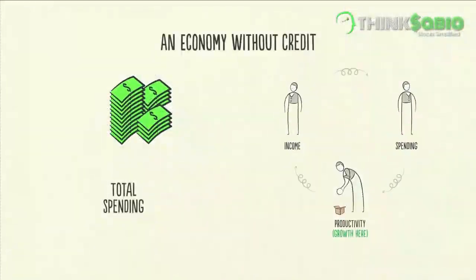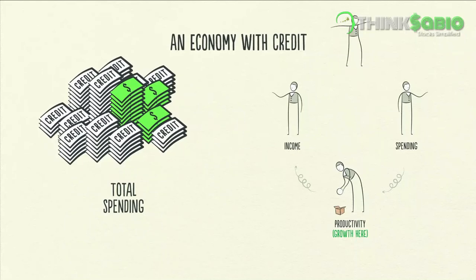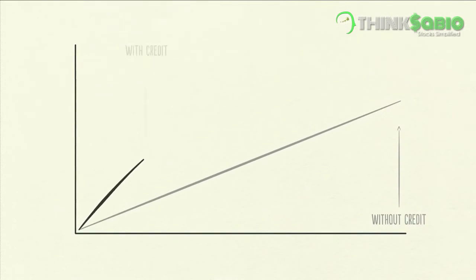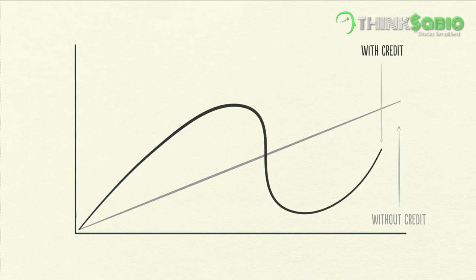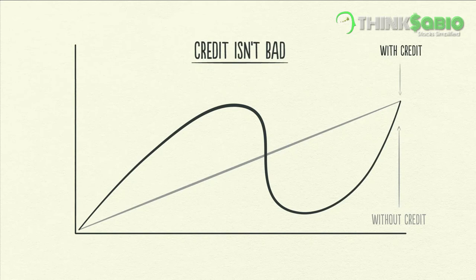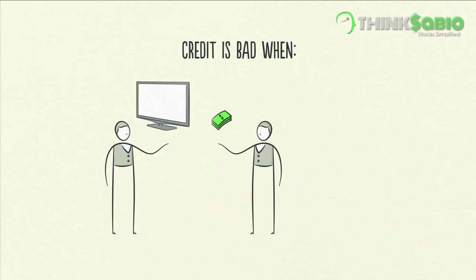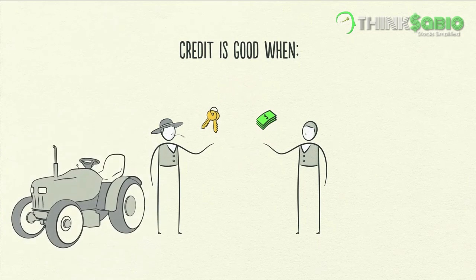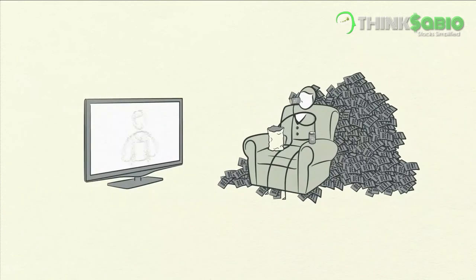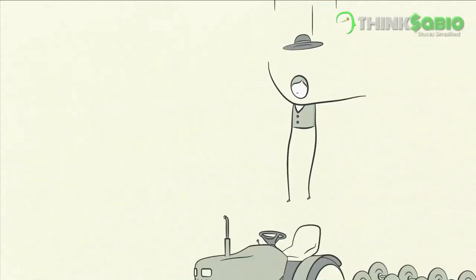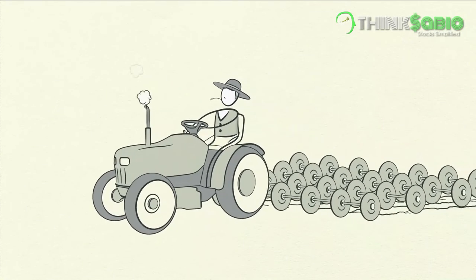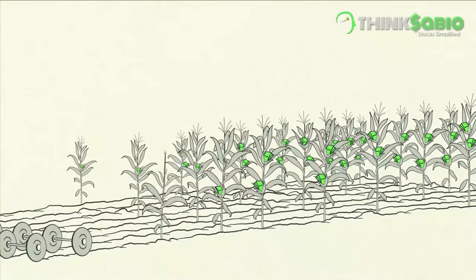In an economy without credit, the only way to increase your spending is to produce more. But in an economy with credit, you can also increase your spending by borrowing. As a result, an economy with credit has more spending and allows incomes to rise faster than productivity over the short run, but not over the long run. Credit isn't necessarily something bad — it's bad when it finances overconsumption that can't be paid back. However, it's good when it efficiently allocates resources and produces income so you can pay back the debt. For example, if you borrow money to buy a big TV, it doesn't generate income to pay back the debt. But if you borrow money to buy a tractor and that tractor lets you harvest more crops and earn more money, then you can pay back your debt and improve your living standards.